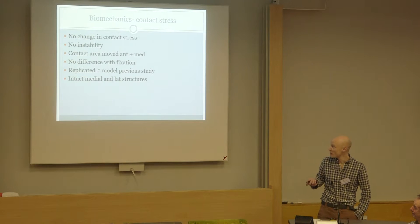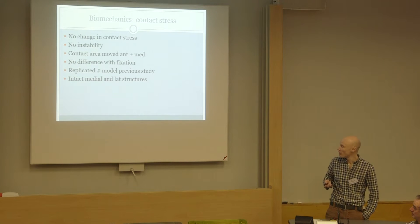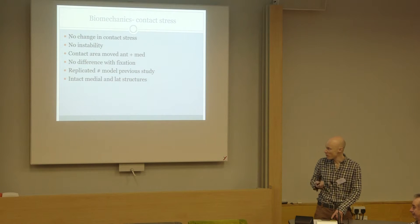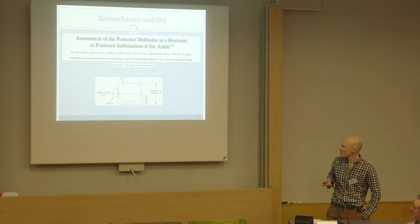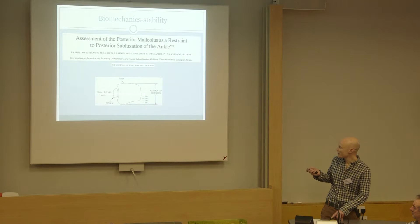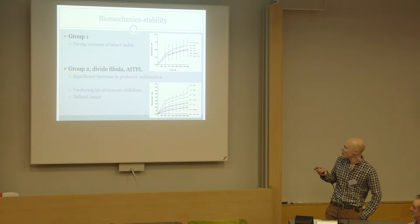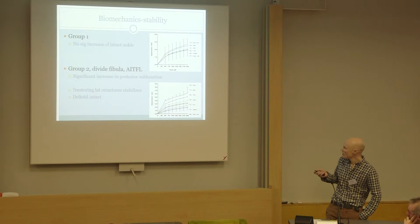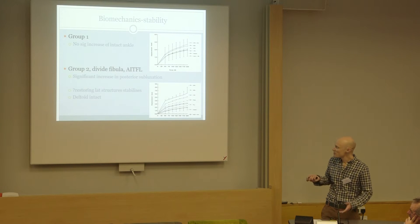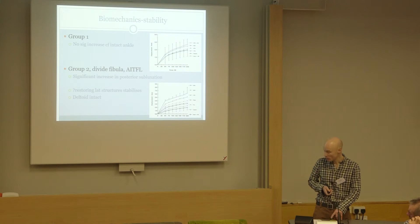However, in their fracture model they left the medial and lateral structures intact — so what they actually produced is an isolated posterior malleolus fracture model. And we know from clinical evidence that isolated posterior malleolus fractures actually do quite well, making it difficult to apply this to an unstable ankle fracture clinically. On stability, another study took percentages from 10 to 40% and loaded the talus to see if it subluxed posteriorly. In the first group with the rest of the ankle intact, there was no change compared to normal. Even with increasing osteotomy size, there was only up to 2mm displacement. It was only when they divided the fibula and anterior syndesmosis in the second group that significant posterior displacement of the talus occurred. They hypothesized that fixing the posterior malleolus might stabilize the ankle, but again the deltoid was left intact — so this isn't a true trimalleolar model.